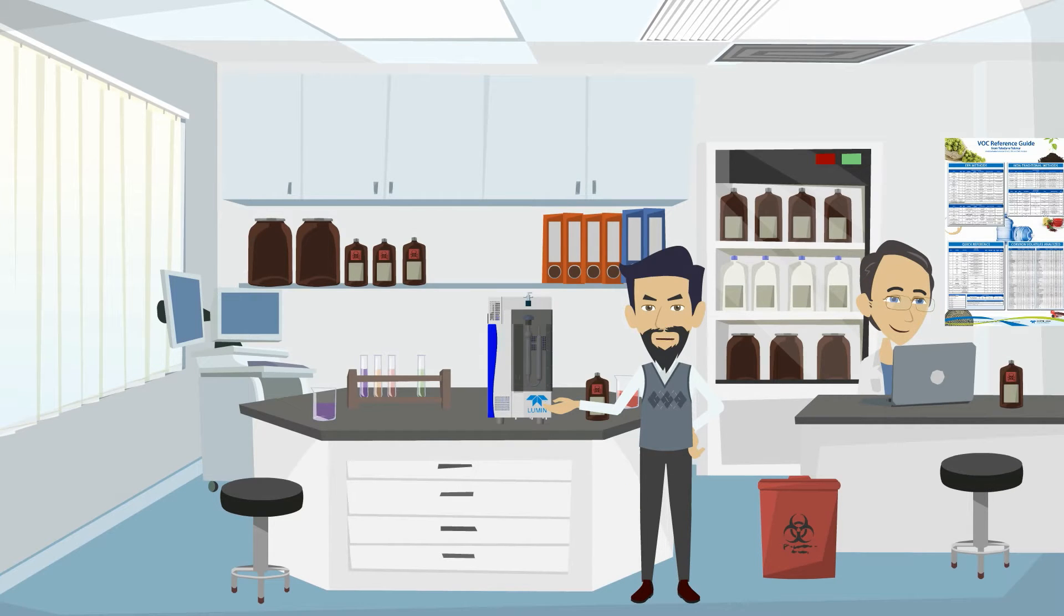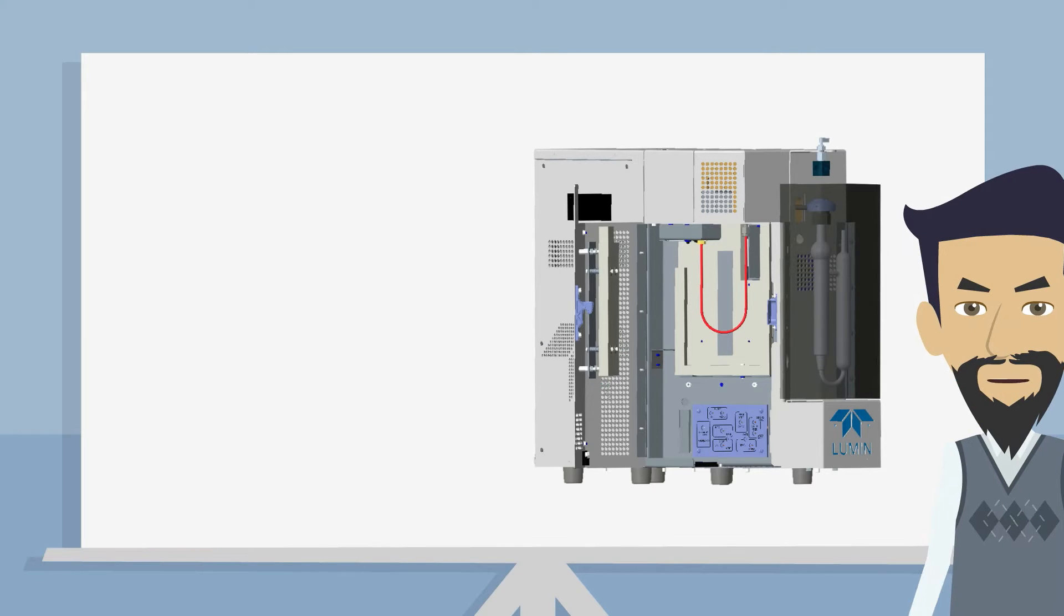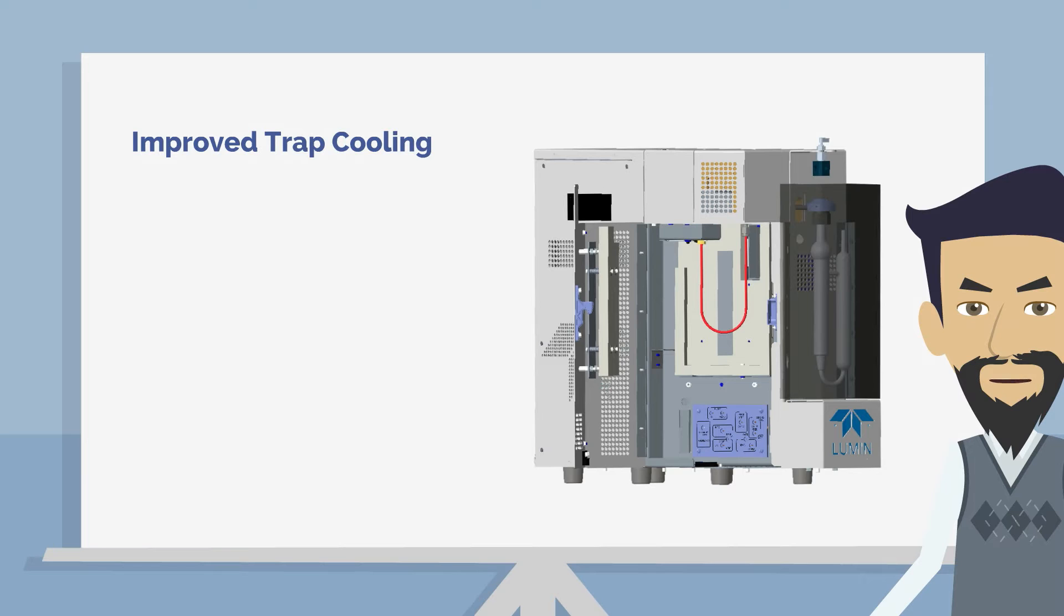Let's take a look inside at some of these new features. One of the new features is improved trap cooling performance. Unlike previous models that pulled air from within the concentrator for trap cooling, the Lumen pulls air from outside the unit, improving its cooling efficiency. This is made possible by a more powerful cooling fan and ducting that channels air from outside the unit into the trap box, thereby reducing cooling times to 90 seconds or less.